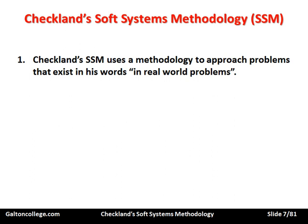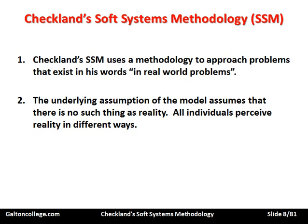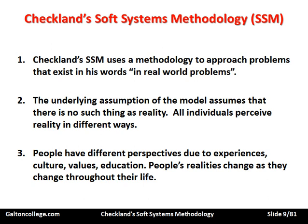The underlying assumption of the model is that there is no such thing as reality — all individuals perceive reality in different ways. So the soft systems approach applies to situations where there is no obvious way of predicting the outcome. It's messy. People can have different opinions about what the outcome will be and how to structure the particular tasks. There will be a variety of opinions and attitudes, and the outcomes themselves may be a surprise. People have different perspectives due to experiences, culture, values, and education.